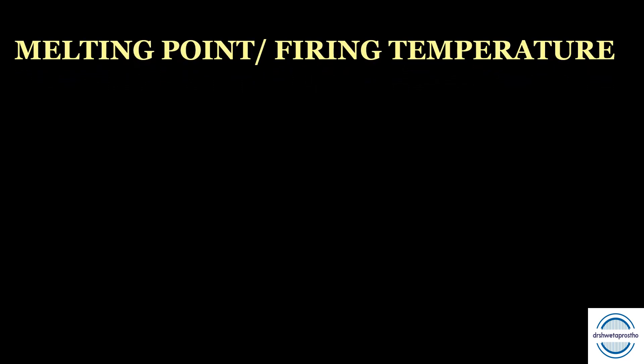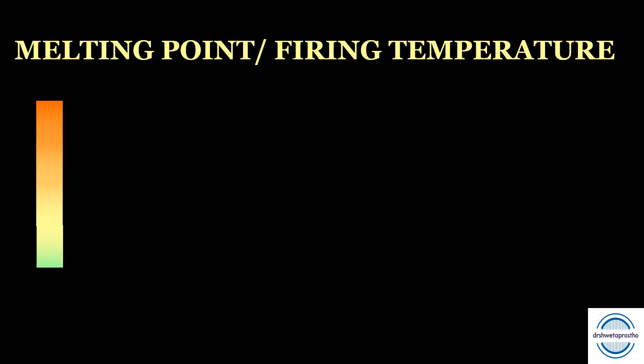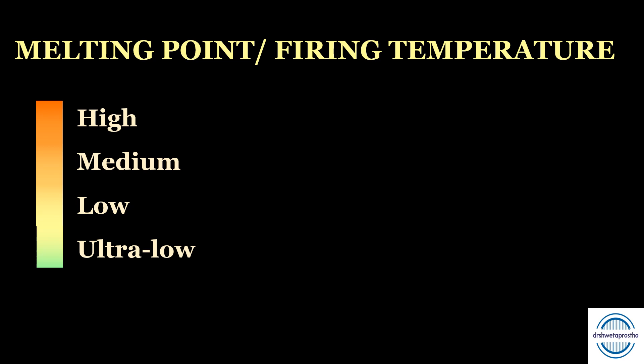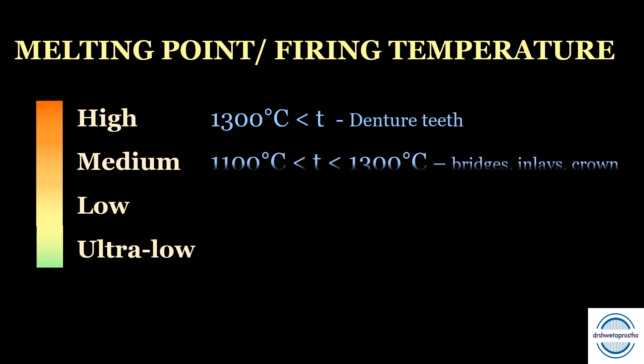According to the melting point or firing temperature, dental ceramics can be classified as high fusing, medium fusing, low fusing, and ultra-low fusing. High fusing ceramics have a temperature range of more than 1300 degrees Celsius and are used to make denture teeth. Medium fusing ceramics have a range from 1000 to 1300 degrees Celsius and are mainly used to fabricate jacket crowns, bridges, and inlays.